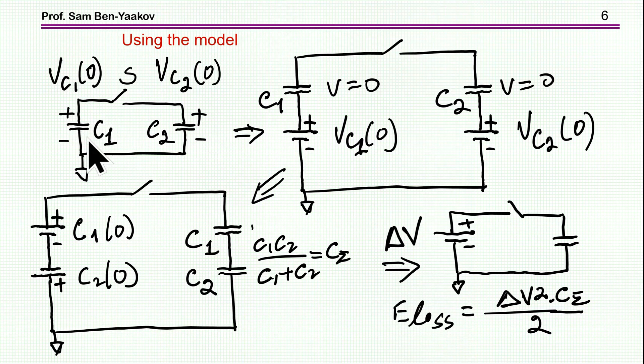Let's use this model to examine the case I've shown earlier. We have two capacitors, each charged to a given voltage. Using this model, I'm replacing each capacitor by a fully discharged capacitor in series with a voltage source. I'm now combining these two voltage sources and combining these two capacitors. This is exactly the same case we have seen at the beginning: the generic charging of a capacitor by a voltage source, only that this voltage source is the difference in the voltages for these polarities. This capacitor is the combined capacitor—the two in series, which is C1·C2/(C1+C2).